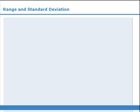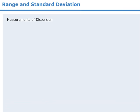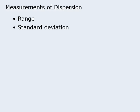In this lesson, we will examine two ways to measure dispersion. In other words, we will examine ways to measure the degree to which a set of numbers are spread out. The first measurement we will look at is range, and the second is standard deviation.